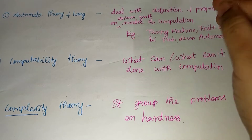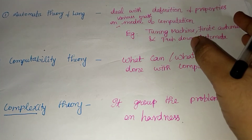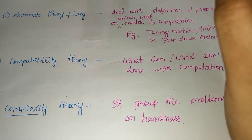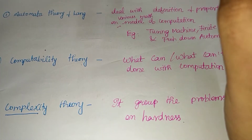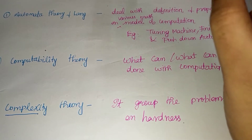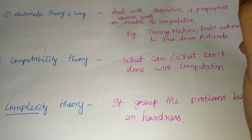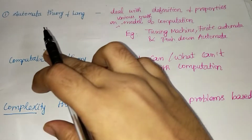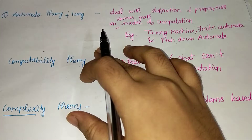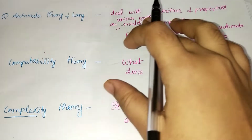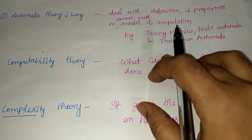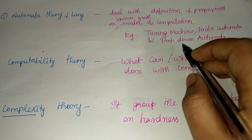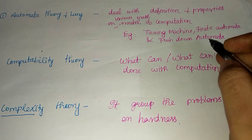Let's see the definitions and properties. There are other mathematical models with many mathematical properties we can use — for example, the Turing Machine, Finite Automata, and Pushdown Automata.